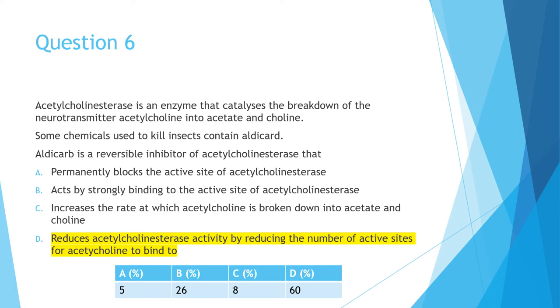Option A is out because it has the word permanent, and I can see why some people chose B. However, reversibility here is the key word. If aldicarb binds strongly to the active site, then it has a preference for it over acetylcholine, and as a result, it is unlikely to be dislodged off the active site. Whereas option D states that aldicarb reduces the enzyme's activity by competing for the active site, which means that it has an equal shot of binding to the active site as acetylcholine, and therefore it is reversible. So that's why option D is the correct one.